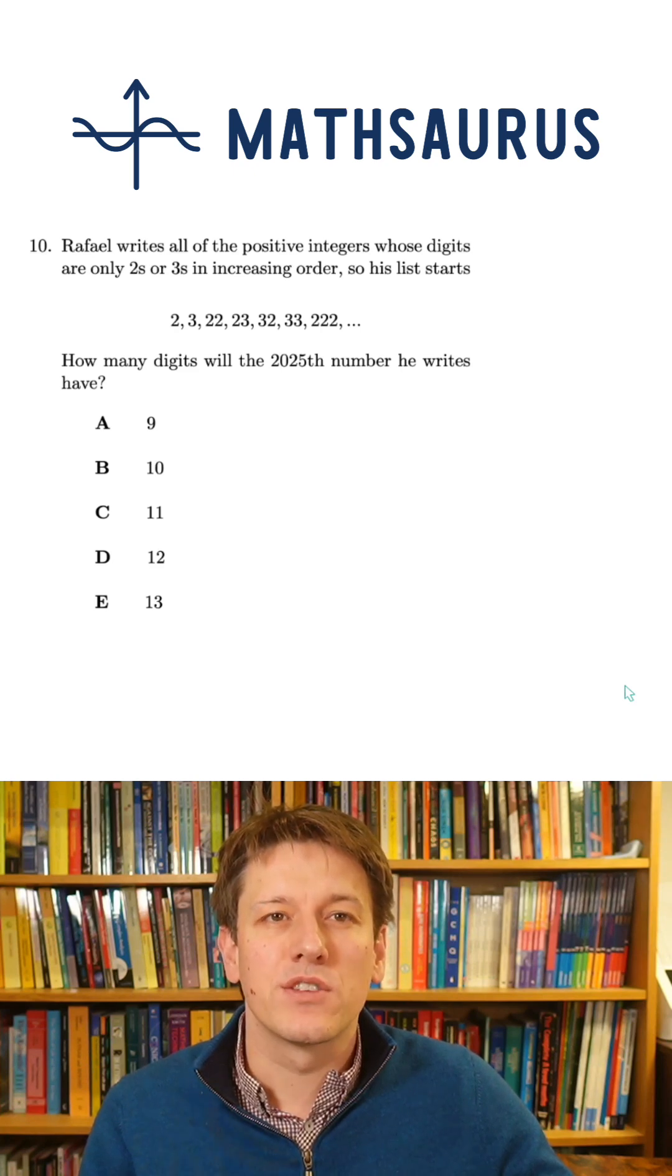So there are two one-digit numbers to begin with, the 2 and the 3. There are four two-digit numbers we can see here.